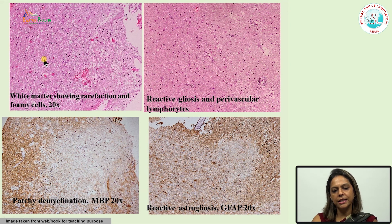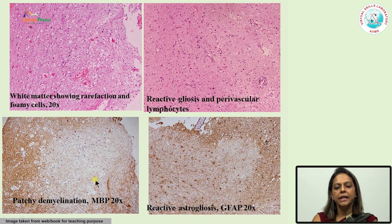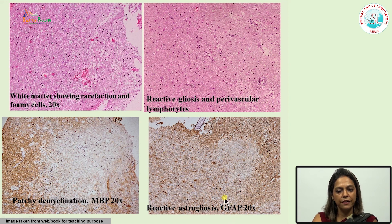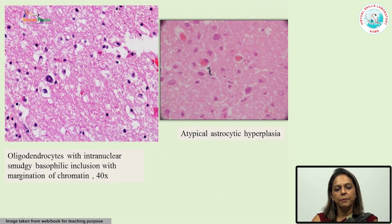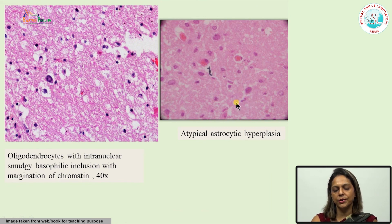This H&E stain section shows areas of rarefaction and infiltration by foamy macrophages, with extensive reactive gliosis. Demyelination can again be highlighted by immunohistochemistry for myelin basic protein, and reactive gliosis by immunohistochemistry for GFAP. This picture shows intranuclear inclusions in the oligodendroglial cells, and this is another picture showing bizarre atypical astrocytes.